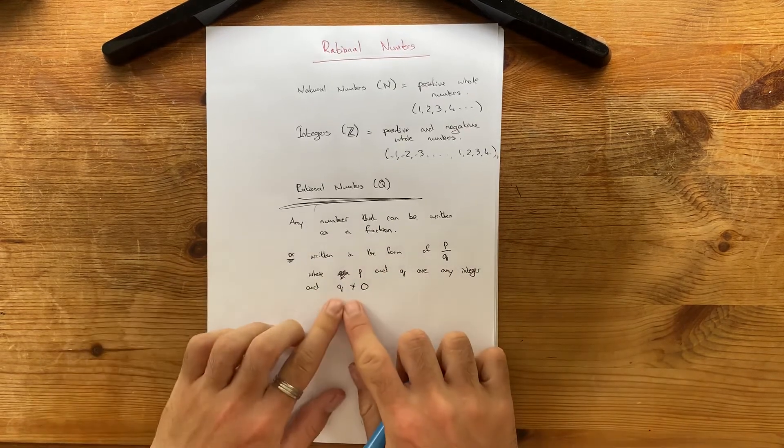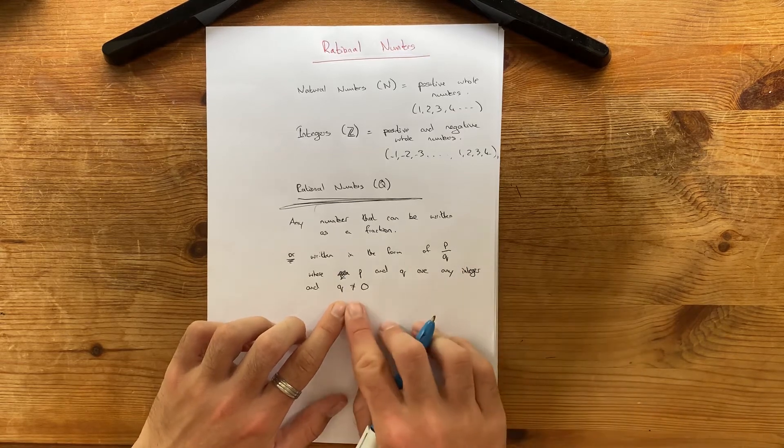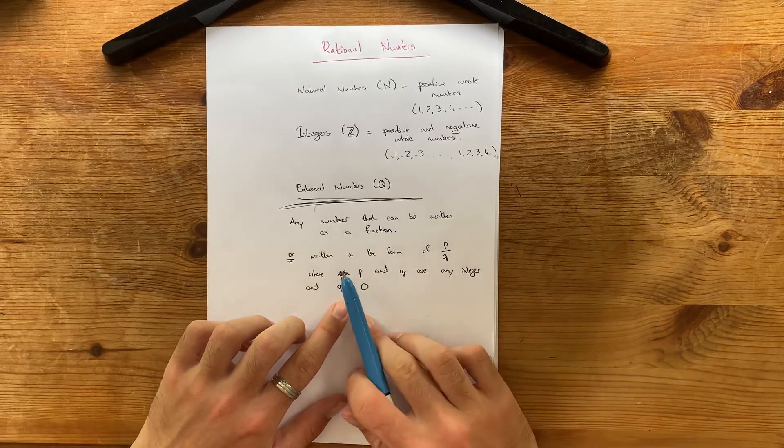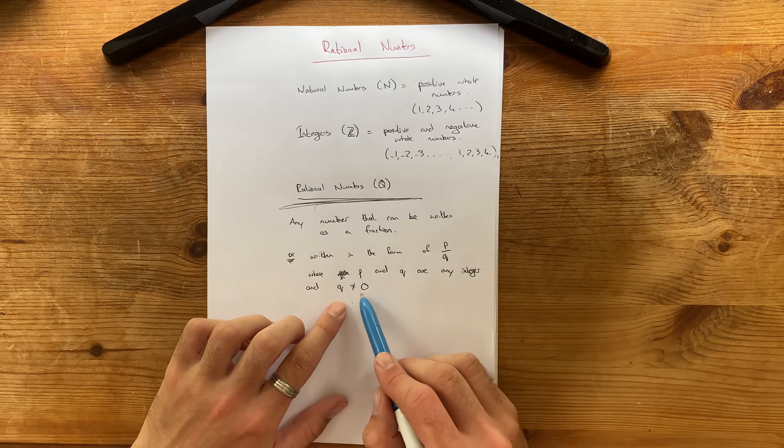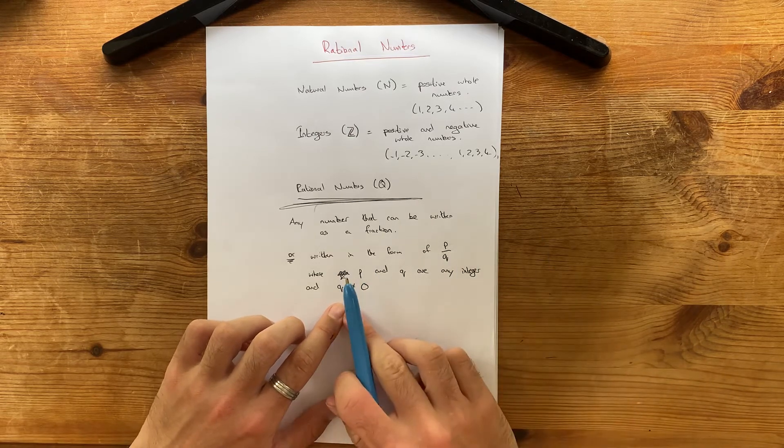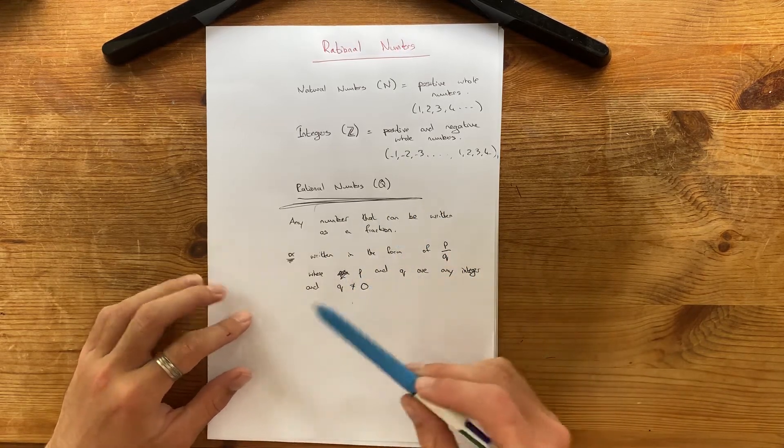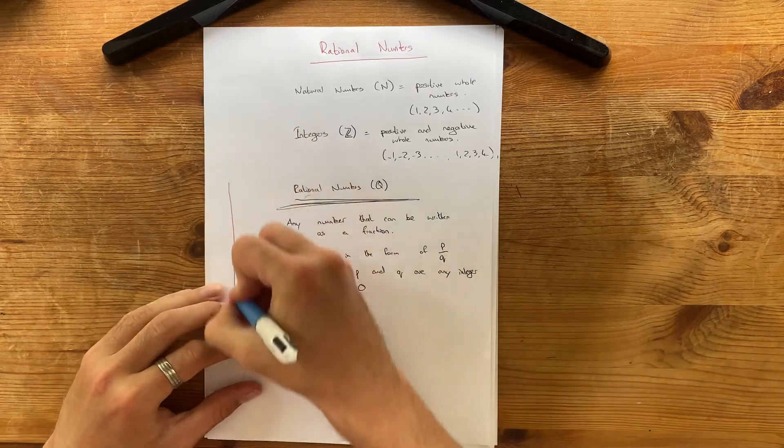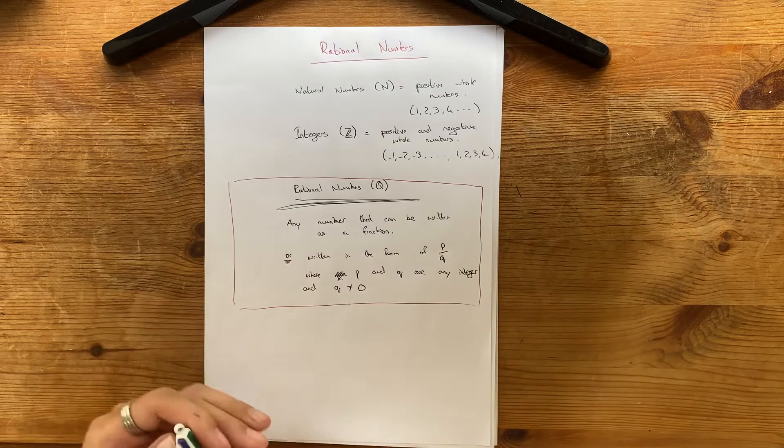Now, the reason why Q isn't equal to 0 is because we're not allowed to divide by 0, and there will be an extra little small video, a very short video, on a proof of why you can't divide by 0. So, basically, a rational number is any number that you can write as a fraction. We'll go through a few of the examples of rational numbers, but you've seen them a lot.